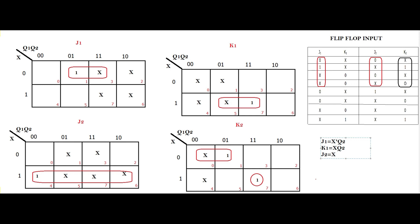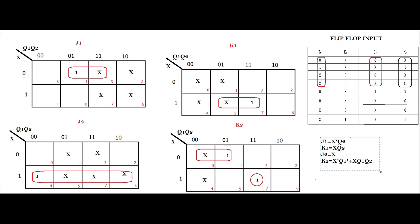K1 equals xQ2. For J2, x is common for all cells in the group, so J2 = x. For K2, we have two groupings: x'Q1' from the quad, plus xQ1Q2 from the single cell grouping. So K2 = x'Q1' + xQ1Q2. These four expressions — J1 = x'Q2, K1 = xQ2, J2 = x, K2 = x'Q1' + xQ1Q2 — will be used to draw the logic diagram.